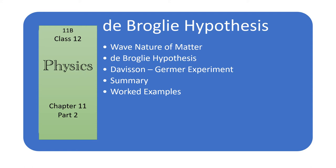Hi friends, today we will study about the wave nature of matter and de Broglie's hypothesis. Welcome to this session. The dual, that is, wave-particle nature of light — electromagnetic radiation in general — comes out clearly from what we have learnt in the preceding chapters. The wave nature of light shows up in the phenomena of interference, diffraction and polarization. On the other hand, in the photoelectric effect and Compton effect, which involve energy and momentum transfer, radiation behaves as if it is made up of a bunch of particles, that is, photons.